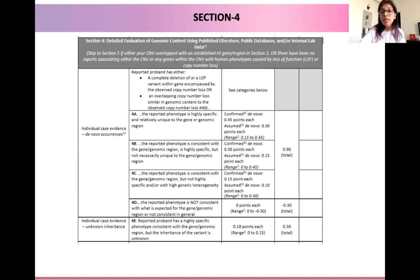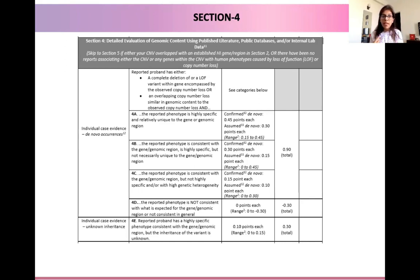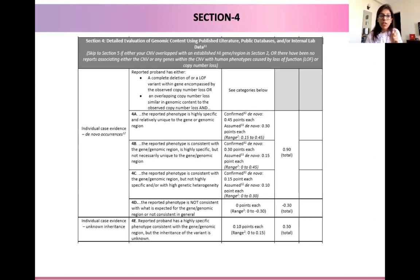In this particular section, we award points based on how specific the phenotype of interest is with respect to what is being seen in the literature. We also have to consider the inheritance patterns that we see. If we did not assign any criteria in section two, we go to section four. If we have assigned section two criteria where our CNV overlapped with an established HI region, we skip to section five.